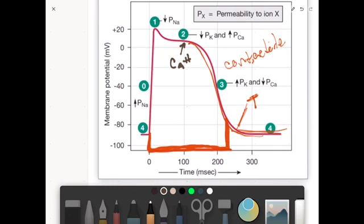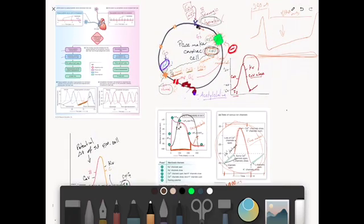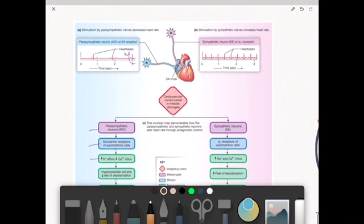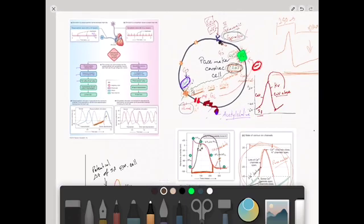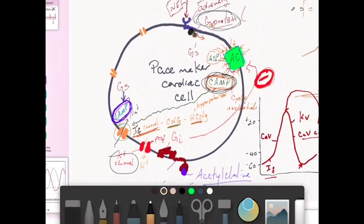The contraction is going to look something like this, the contraction force. Therefore, you can't get summation and, importantly, can't get tetanus in cardiac myocytes like you can in skeletal muscle cells. There's all that stuff. Here's the acetylcholine and norepinephrine effects. We went through all that with this pacemaker cell, adenylyl cyclase increases or decreases, and cAMP.